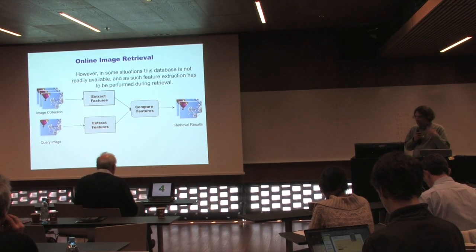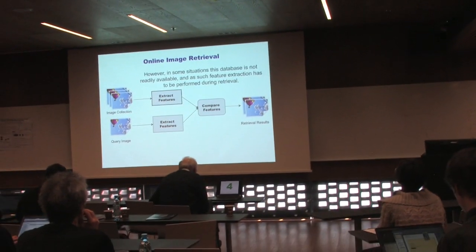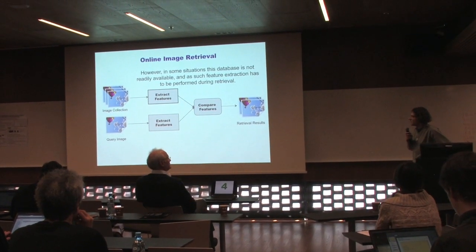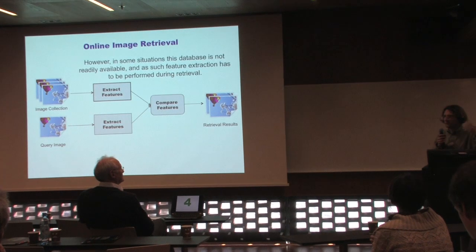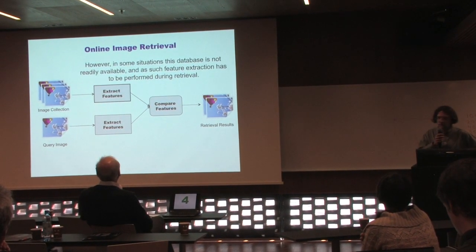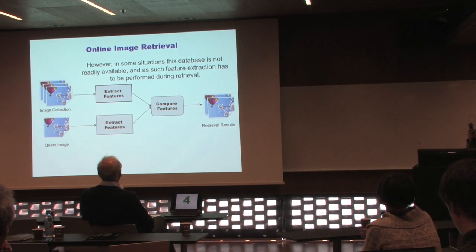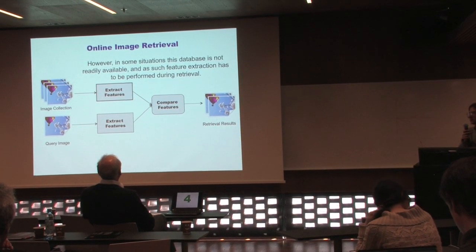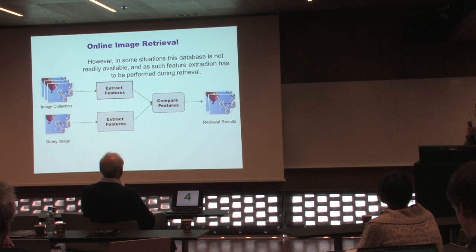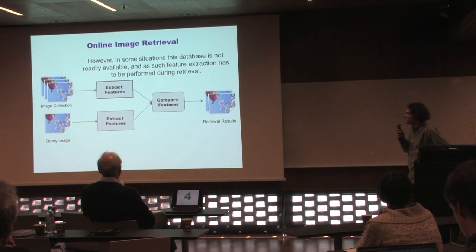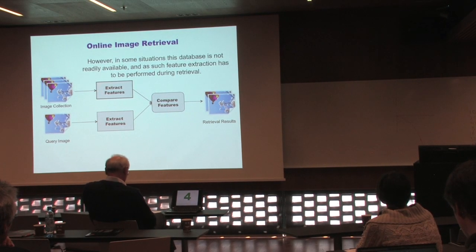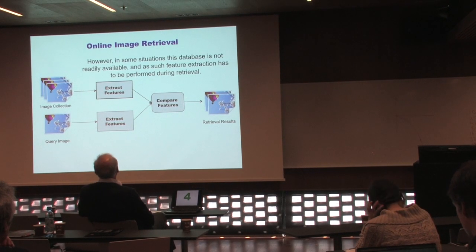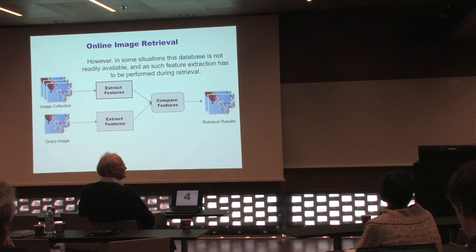If you don't have a database of stored features, or can't access it — for example, if you want to perform content-based retrieval on Flickr — you essentially need to download the images and perform feature extraction on the fly, both for the query image and all images in the dataset, then compute similarity and ranking. This is what we call online image retrieval, and this is what we're trying to address here.